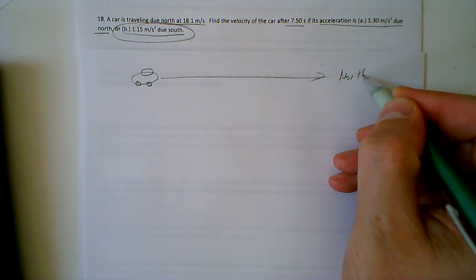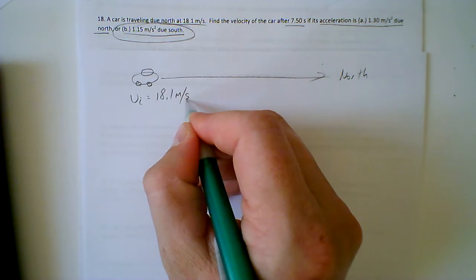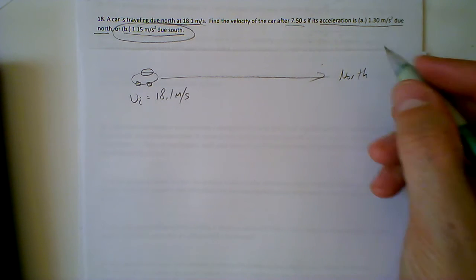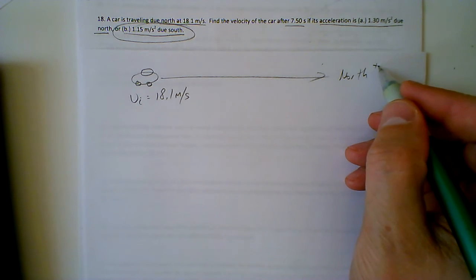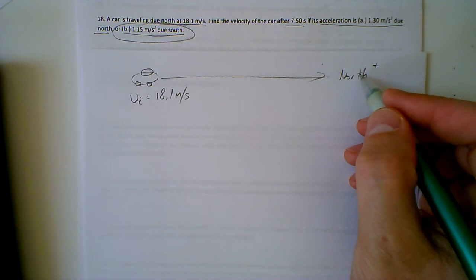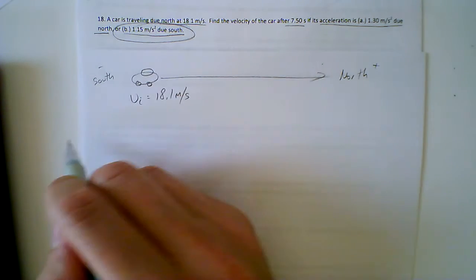Its initial velocity is 18.1 meters per second in this positive direction. We'll call it the north, we'll use the mathematical sign positive to represent north, and therefore south, anything south we're going to represent with a negative.